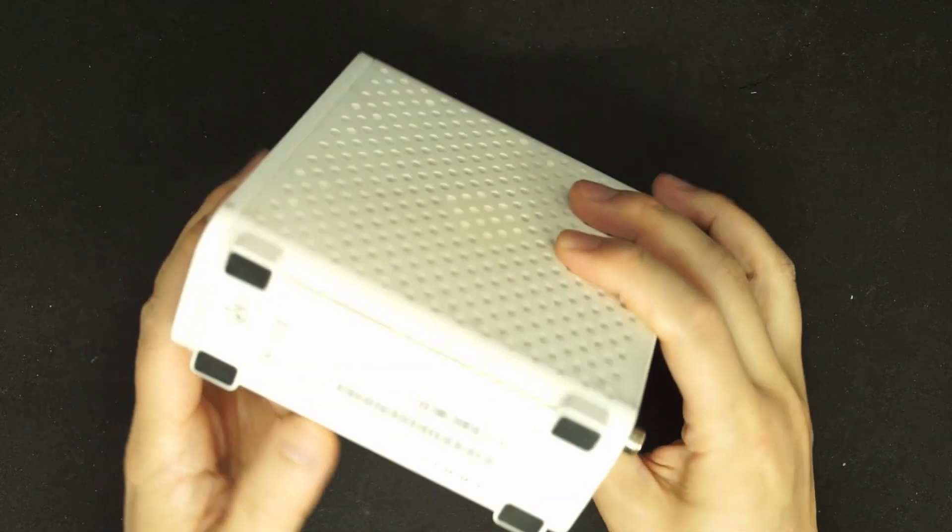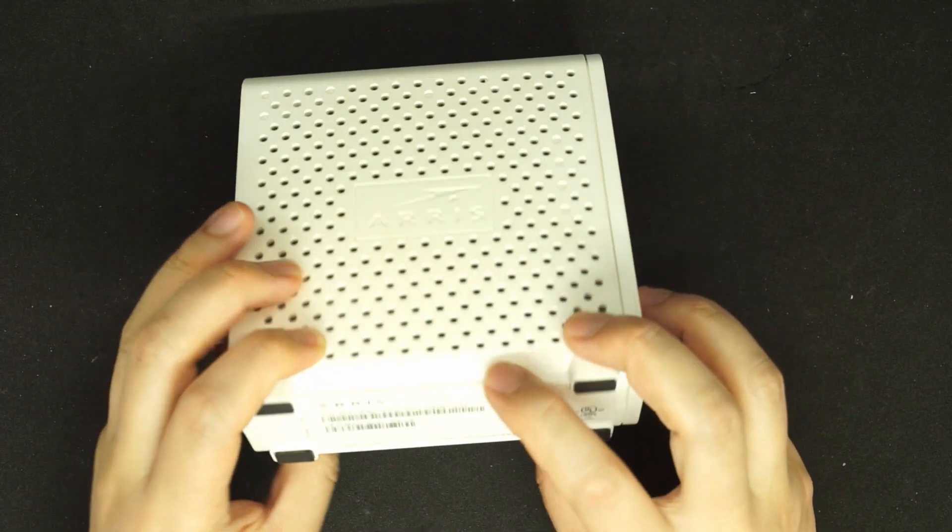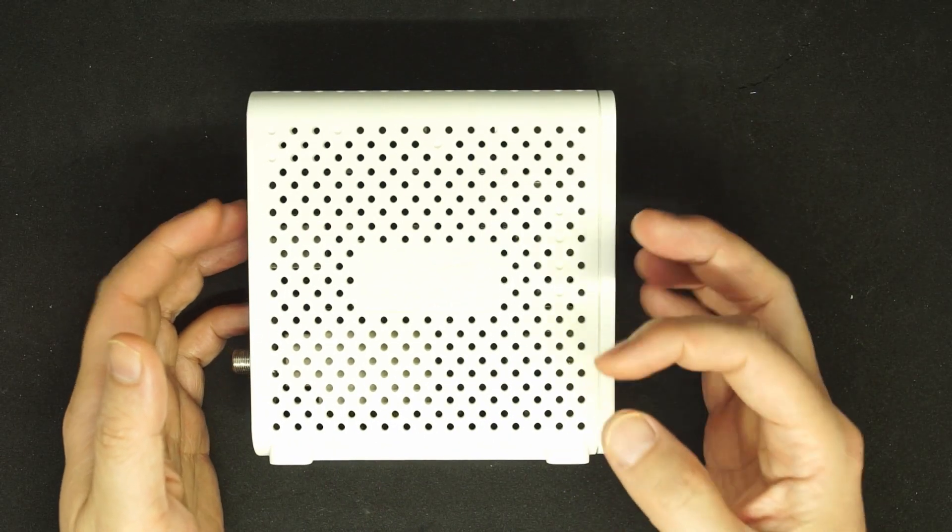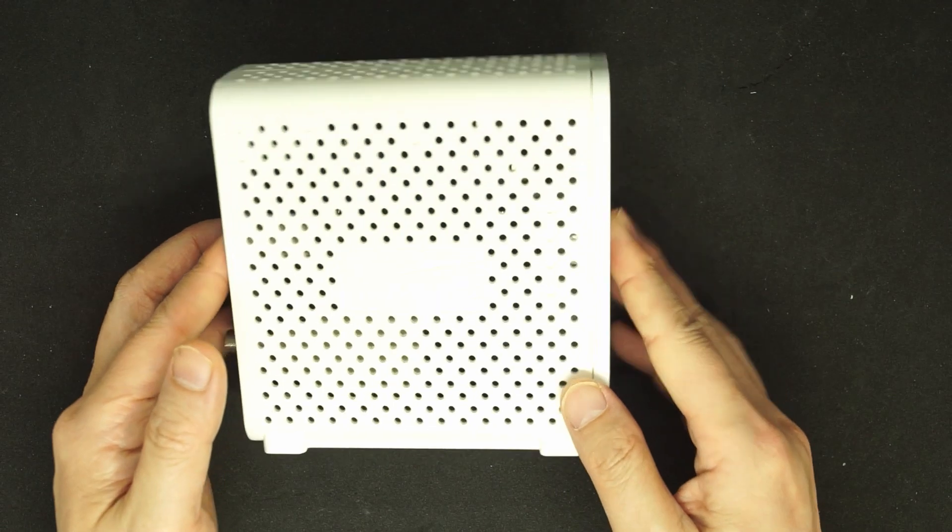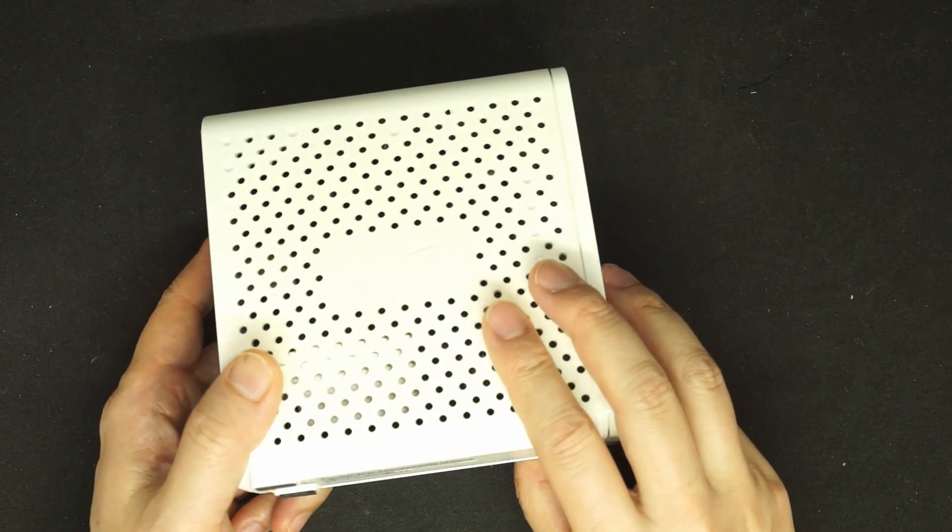This is a new modem, an ARIS SB6183. Inside there is a SPI flash, but it's the surface mount BGA. Let's show you how to program this device with the U-Link NT.